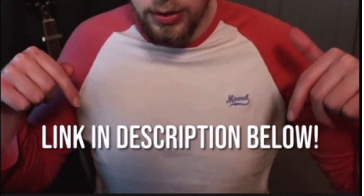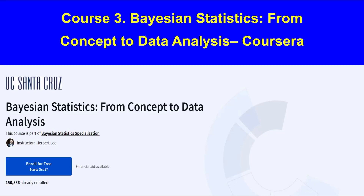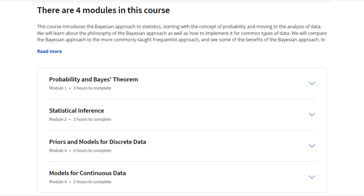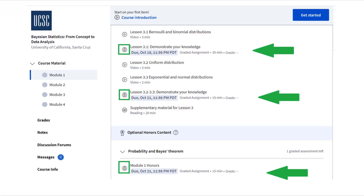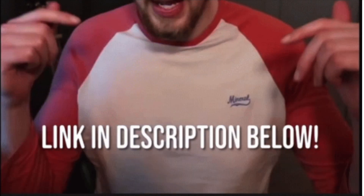Now let's check out Bayesian Statistics: From Concept to Data Analysis on Coursera. This course takes about 12 hours to complete and is good for learners with some experience. It is offered by the University of California. You will learn topics like probability and statistical thinking, which is especially helpful if you want a deeper understanding of statistics. Just keep in mind that if you are auditing the course for free, some quizzes might not be available.